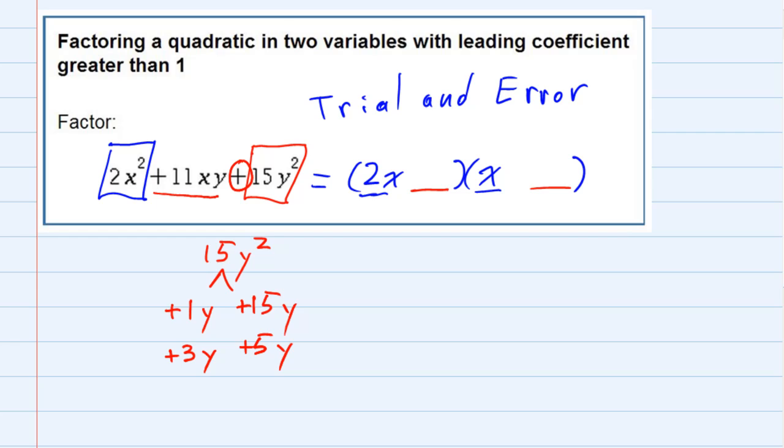So first let's try the 1y and the 15y. When we plug those in, both positive, the inner gives us a 1xy and the outer gives us a 30xy. Well, those are not going to add up to the 11xy that I need in the middle. So I'm going to erase those and just assume that that was our error, that the 1y and the 15y didn't work for us.